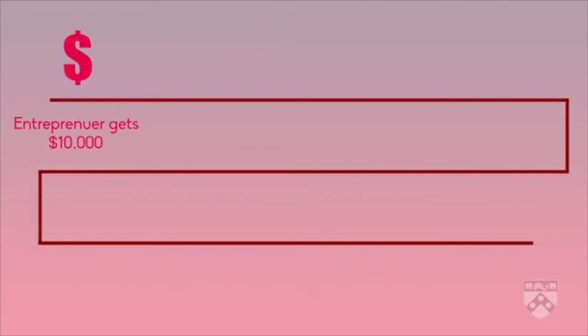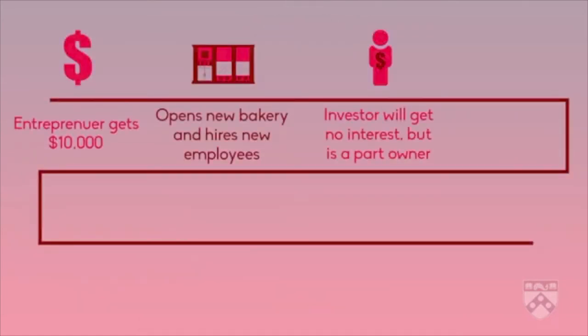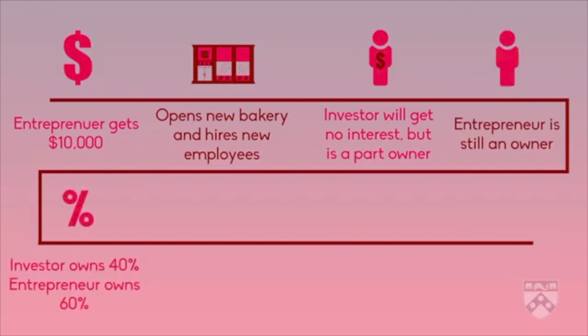Let's imagine that the entrepreneur sells an investor a 40% share in the company for a $10,000 investment. The entrepreneur gets $10,000 to help cover the cost of opening the new bakery and hiring the new employee. Unlike a loan, this money does not need to be repaid. Unlike debt financing, the investor will not get interest for this investment. Instead, the investor is now an owner along with the entrepreneur. The investor will get 40% of the business's future profits.